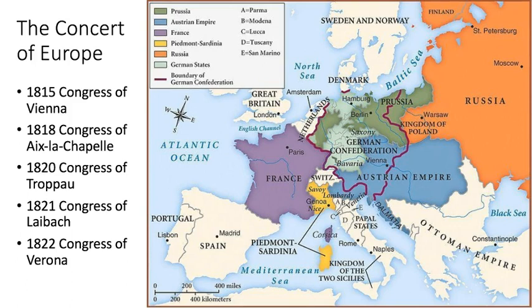In 1821, the Congress of Laibach is when Austria intervenes in Sicily and Naples in order to restore the king there.